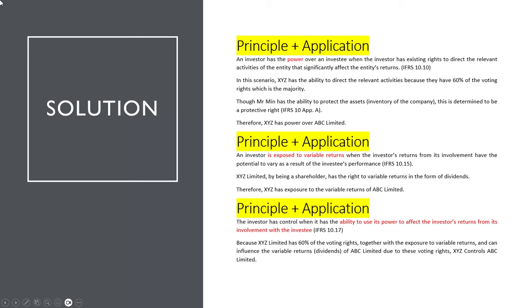An investor has power over an investee where they have the existing rights to direct the relevant activities that significantly affect the entity's returns — that's the principle. In this scenario, XYZ has the ability to direct the relevant activities because they have 60% of the voting rights, which is the majority. Though Mr. Min has the ability to protect the assets — the inventory — this is a protective right. Therefore, XYZ has power over ABC Limited.